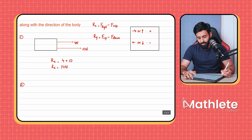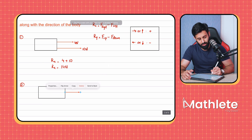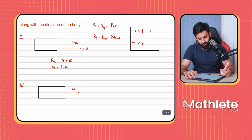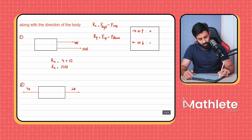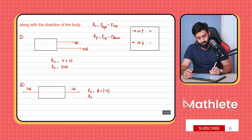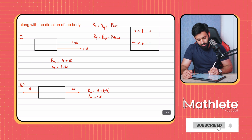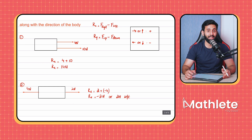Let's do another example. Say you have an object with two forces: 2 newtons towards the right and 4 newtons towards the left. The horizontal resultant is 2 minus 4, which equals negative 2 newtons. So the resultant is 2 newtons towards the left.